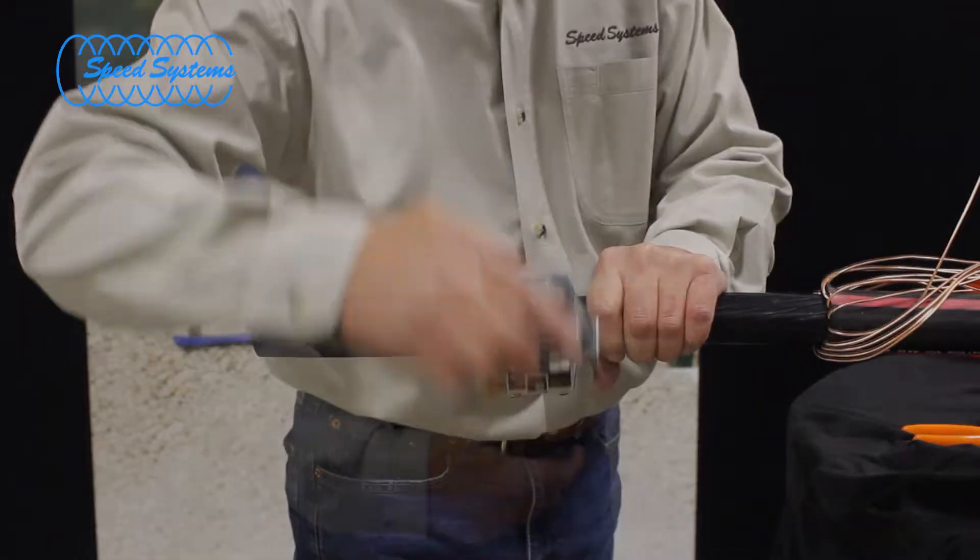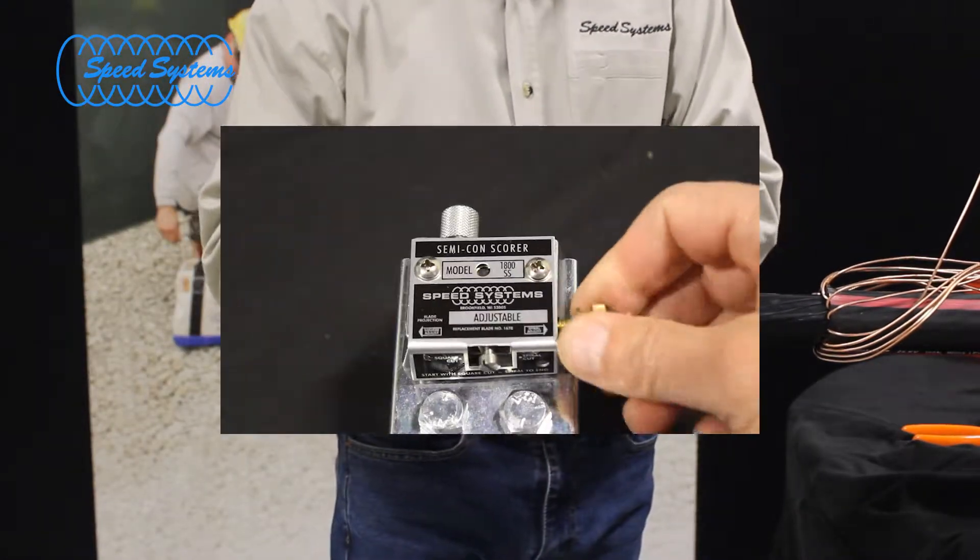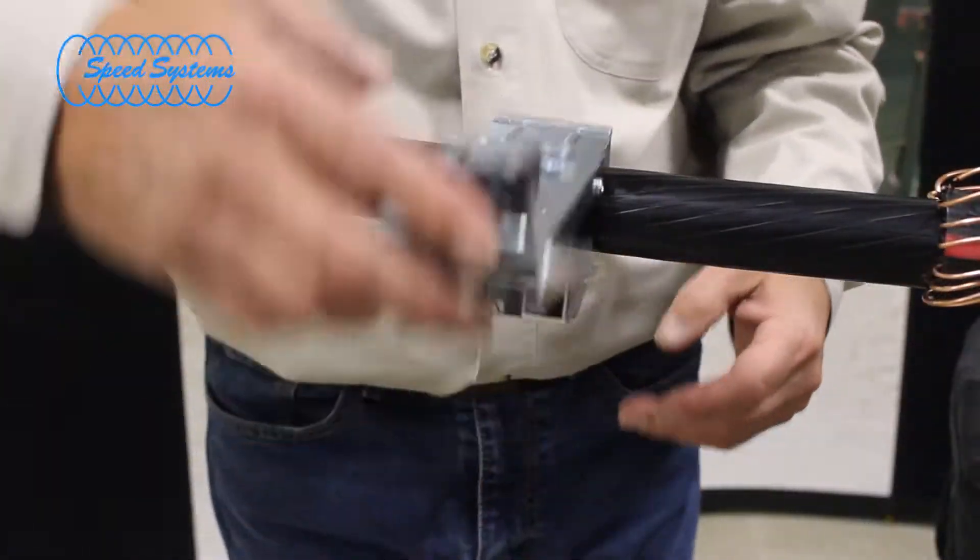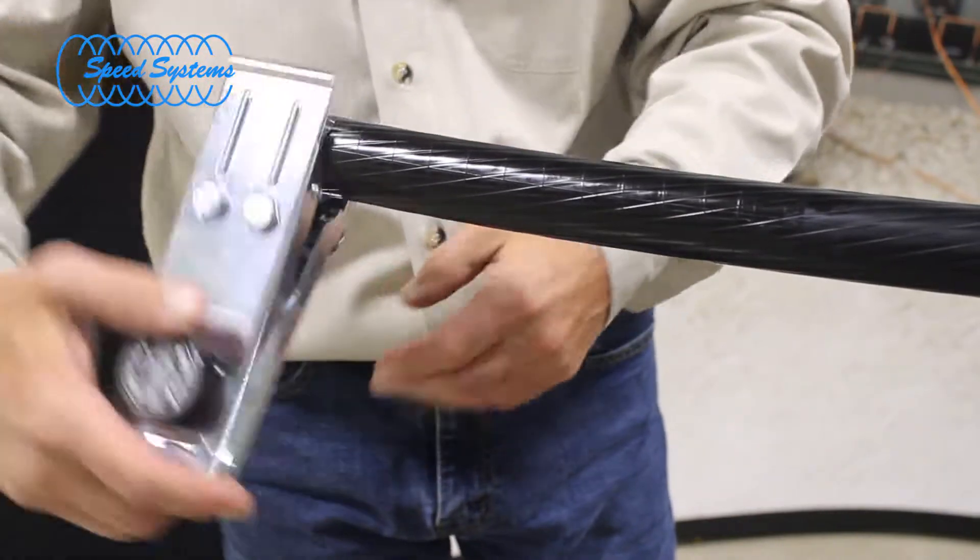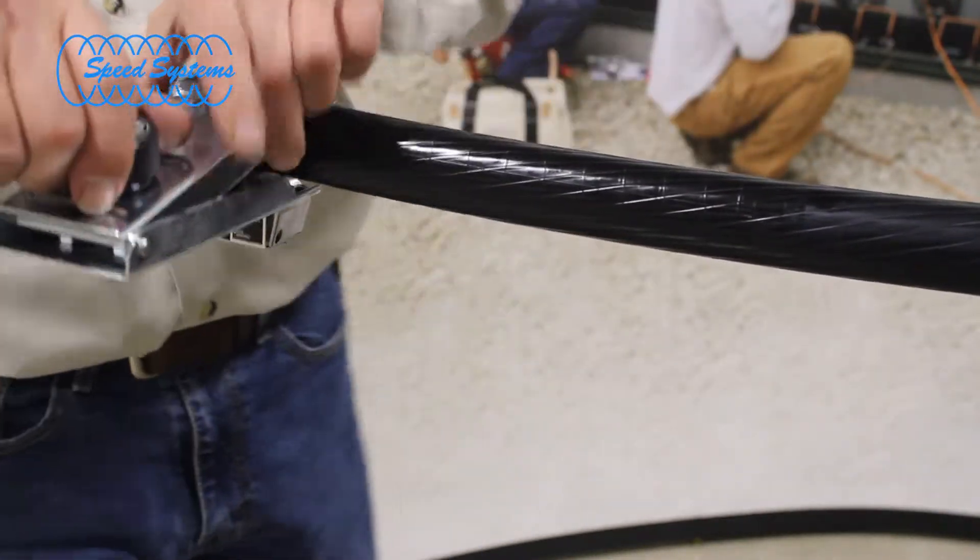Rotate the tool counterclockwise around the cable to make the square cut. Without removing the tool from the cable, move the blade lever to the spiral position and rotate the tool until it reaches the end of the Semicon. Open the jaws and remove the 1800SS from the cable.